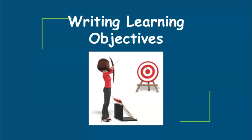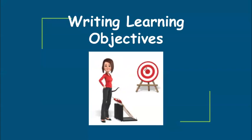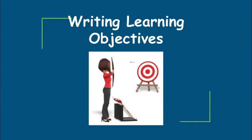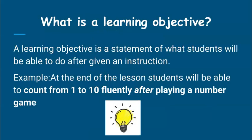Before we can start teaching, the first thing we need to have is our objectives. These are what will guide our lesson and keep track of what was done throughout the lesson. So we need to first understand what a learning objective is. A learning objective is a statement of what students will be able to do after giving an instruction. For example, at the end of the lesson, students will be able to count from one to ten after playing a number game.